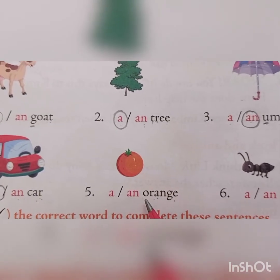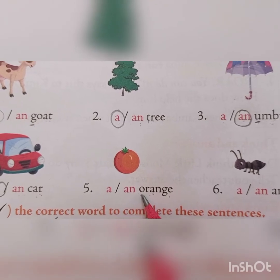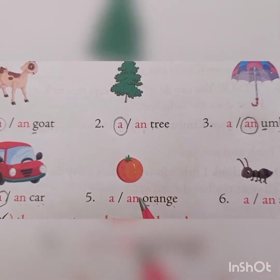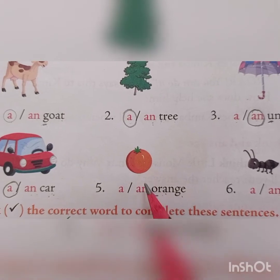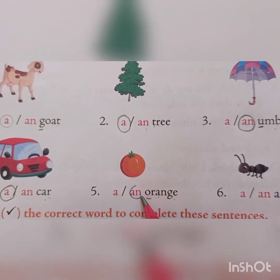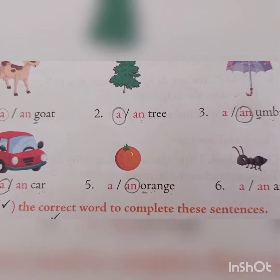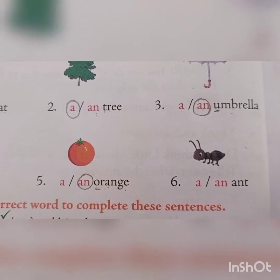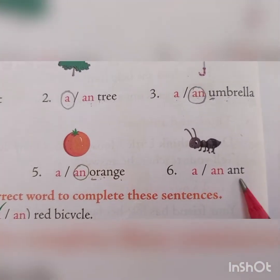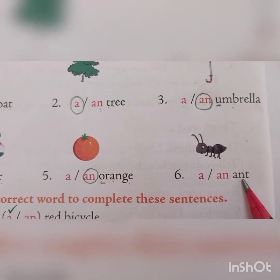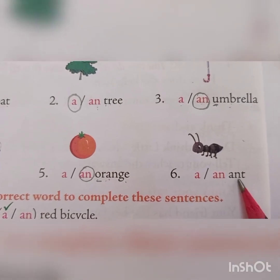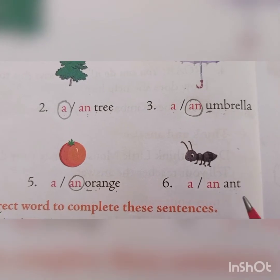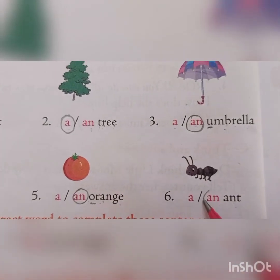Very good. Orange begins with the sound of a vowel, so you have to circle 'AN.' Next: ant. A-N-T. Yes, give me the answer — AN ant. Very good.